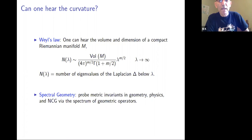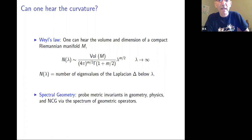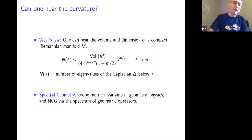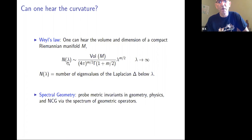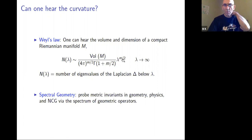The number of eigenvalues for the Laplace operator — in his case it was the flat Laplacian, for domains in R³ and Rⁿ, but the proof was extended to compact Riemannian manifolds in general — is captured by the eigenvalue counting function N(λ). This gives information about the volume and dimension of the manifold through Weyl's asymptotic law: the total number of eigenvalues less than λ grows like λ^(m/2).